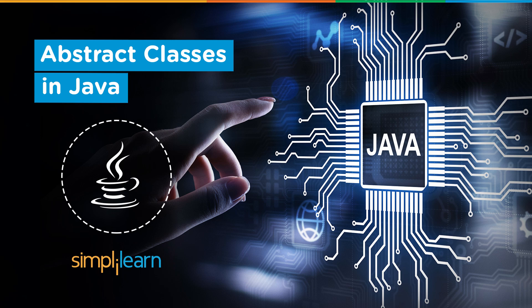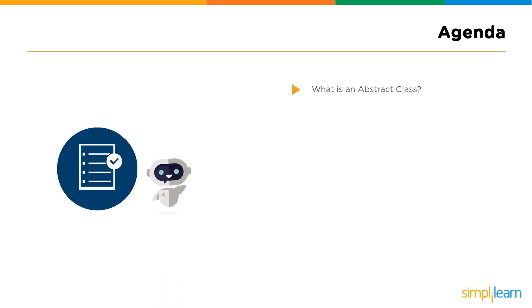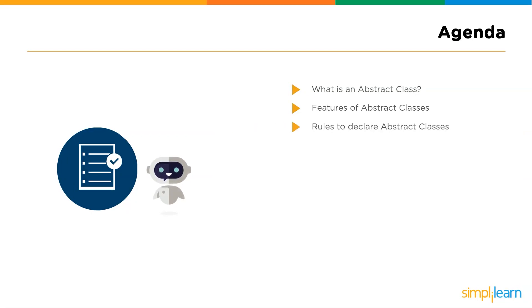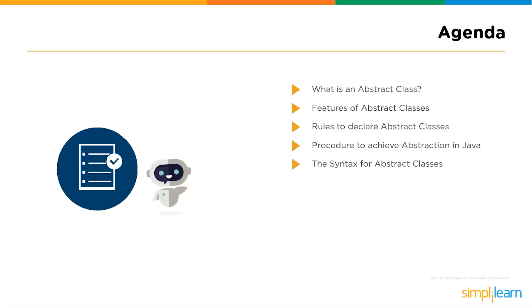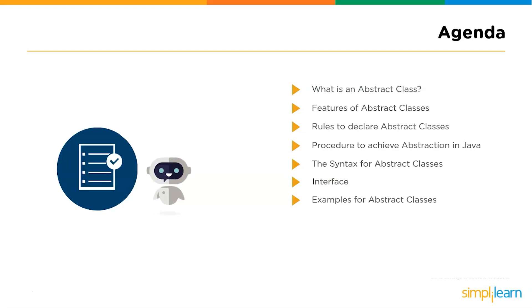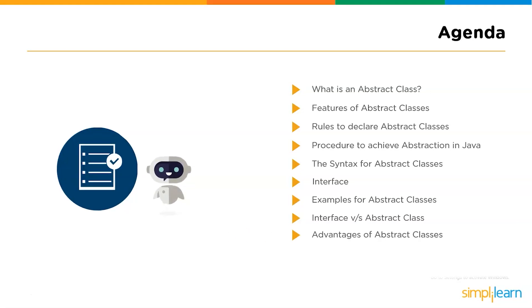Without further ado, let us quickly start with our agenda for today's session. First, we will have a brief introduction to abstract classes. Next, we will discuss the major features of abstract classes, followed by the crucial rules to use them. Then we will cover abstraction, interfaces, example programs, key differences between abstract class and interface, and finally the advantages and disadvantages of abstract classes.